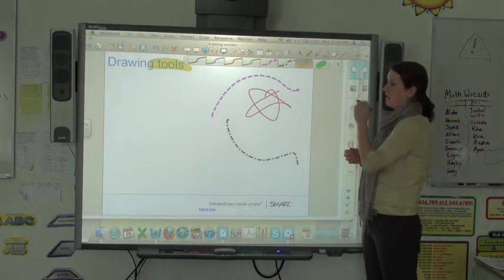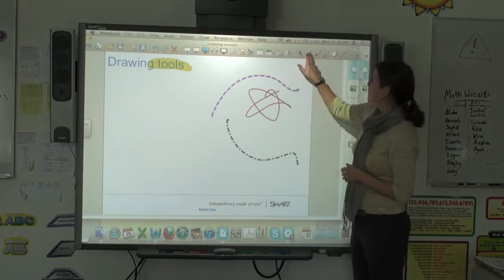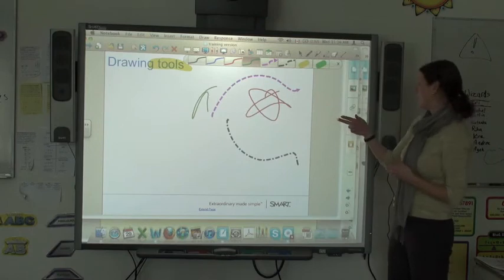So if you're looking at poetry or looking for rhyming words, the kids can come up and instead of just underlining, they can actually highlight something. If you want to use one of these pens, so I'm writing with the green line and I want to change the way this pen looks...